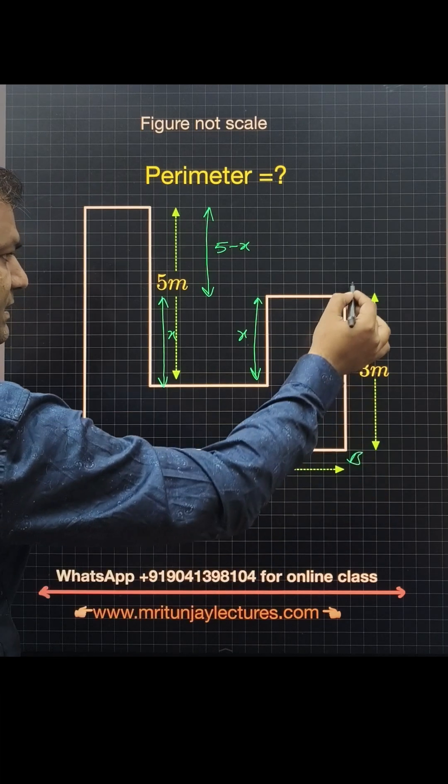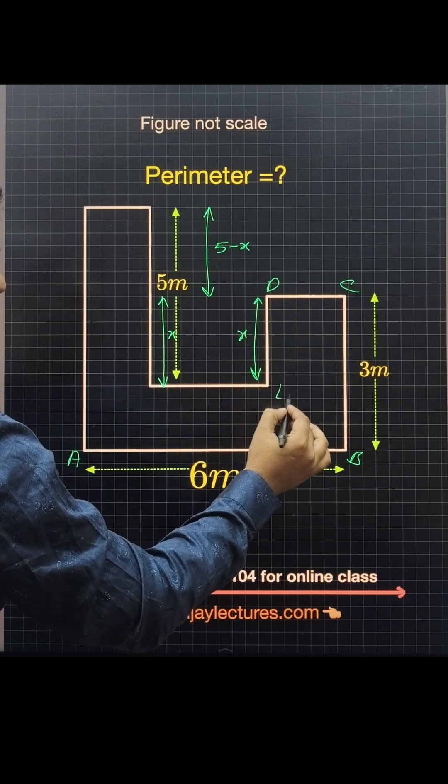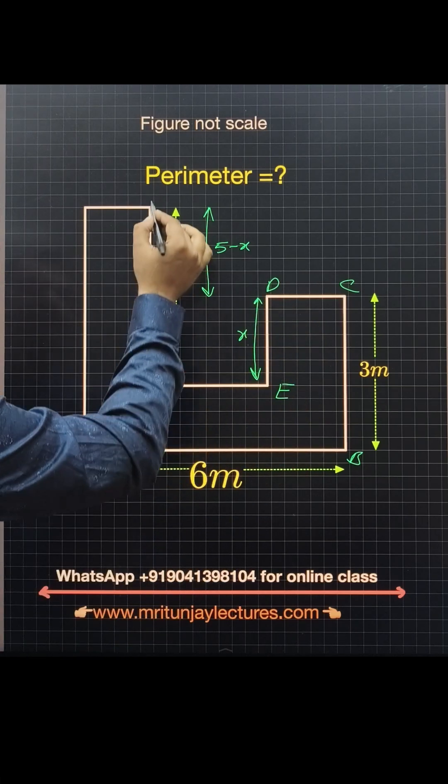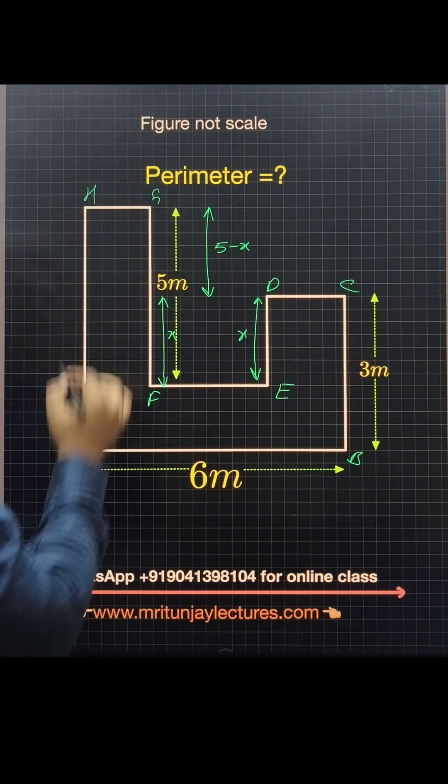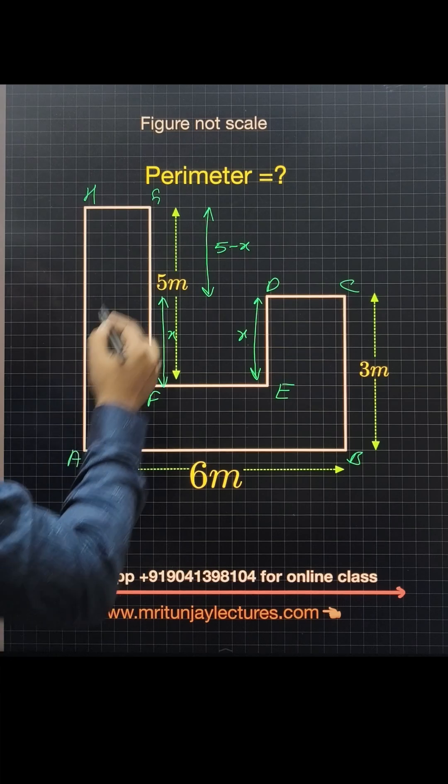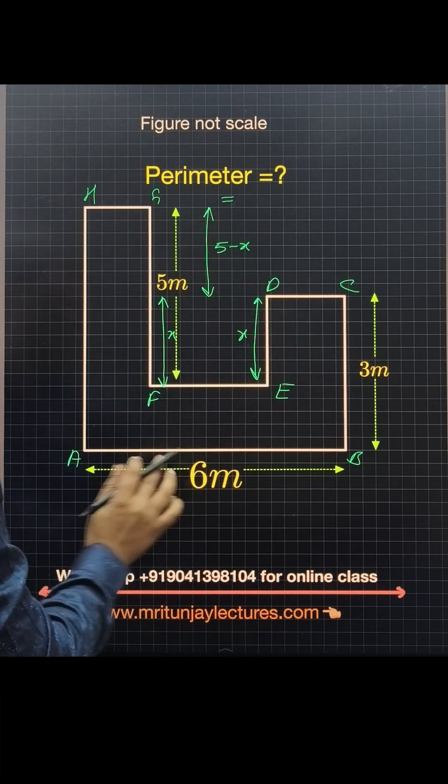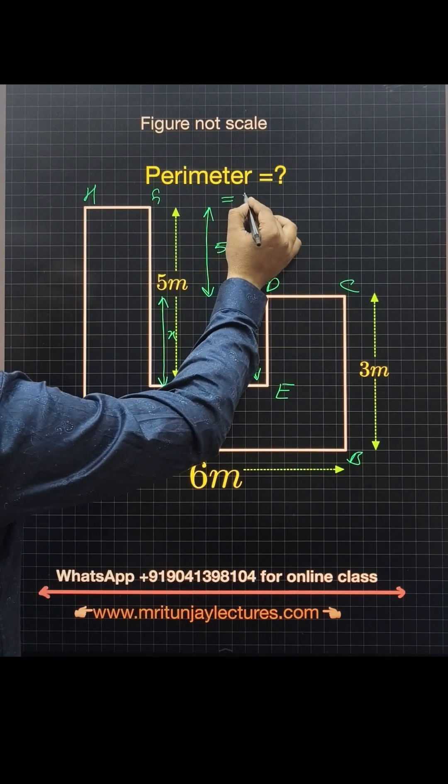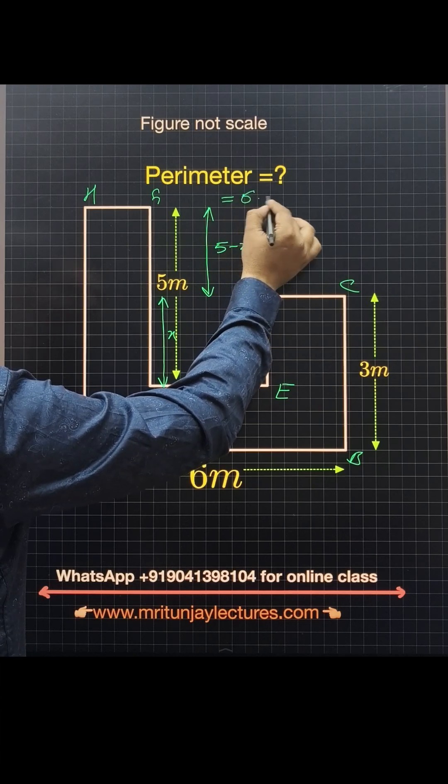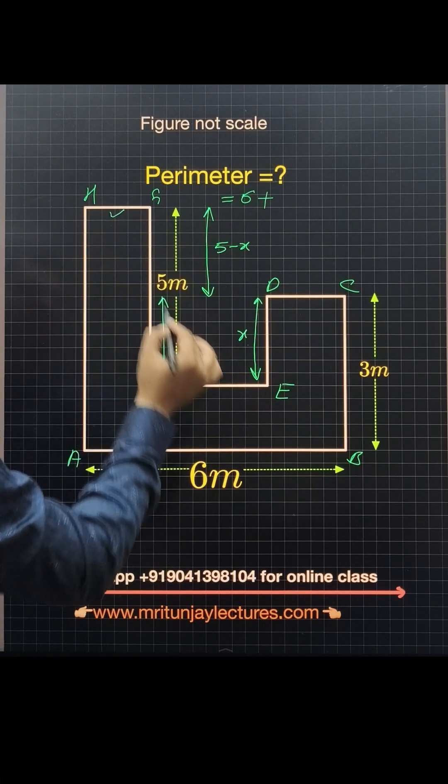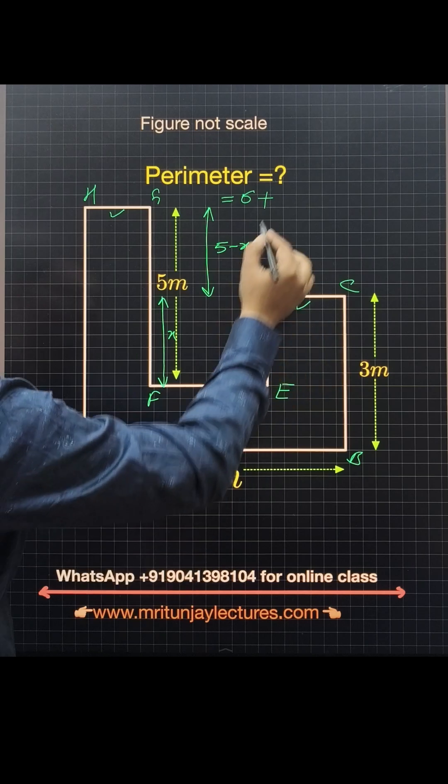The sides are A, B, C, D, E, F, G, H. So perimeter means AB, which is 6 meters, plus the sum of these three distances which is also 6.